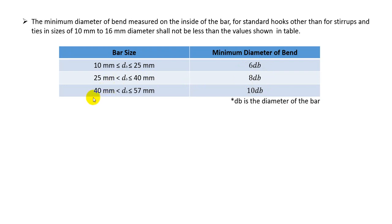And if the reinforcement size, I mean bar size, more than 40mm and less than 57mm, then our diameter of band will be 10 dB, 10 dB means 10 times of bar diameter. Here, dB is the bar diameter of the bar.